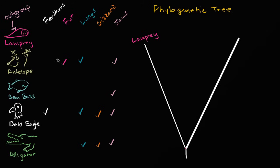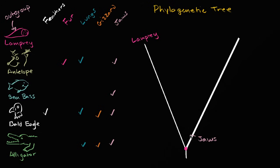The next thing to think about is how did everything else end up branching? What's common about everything else that maybe wasn't common about the lamprey? One common thing is that everything else we have listed here has jaws. So it's reasonable to say we have this common ancestor between the lamprey and everything else at this branching point, and then it branched off into multiple species, and one of those species must have evolved jaws. Jaws are considered a derived trait — this ancestral species at the root did not have jaws, but at some point they evolved and stuck around because they proved favorable in certain environments.